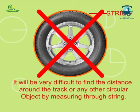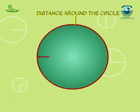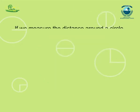Moreover, the measurement will not be accurate, so we need some formula for this. Let us see if there is any relationship between the diameter and the circumference of the circle.